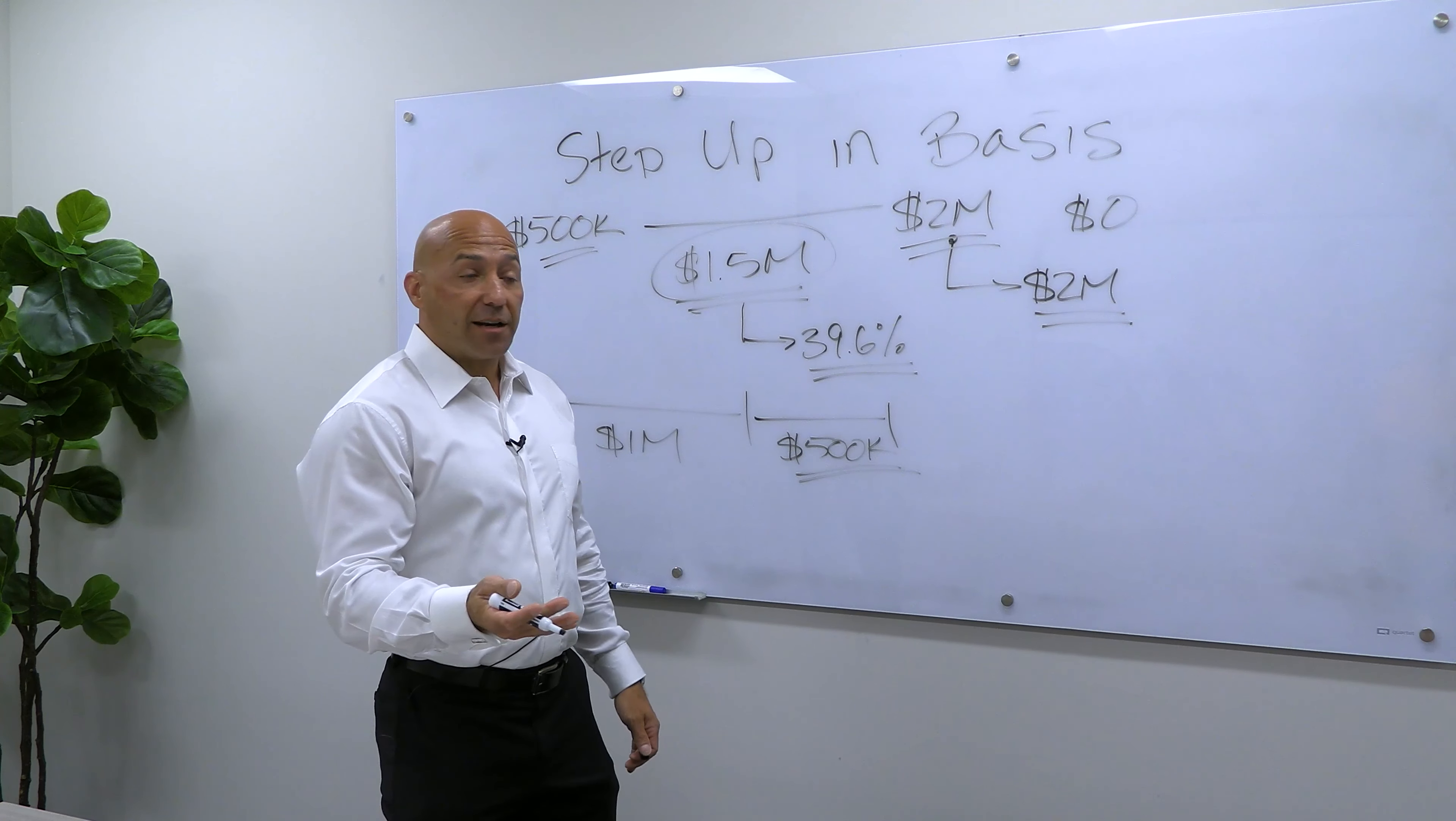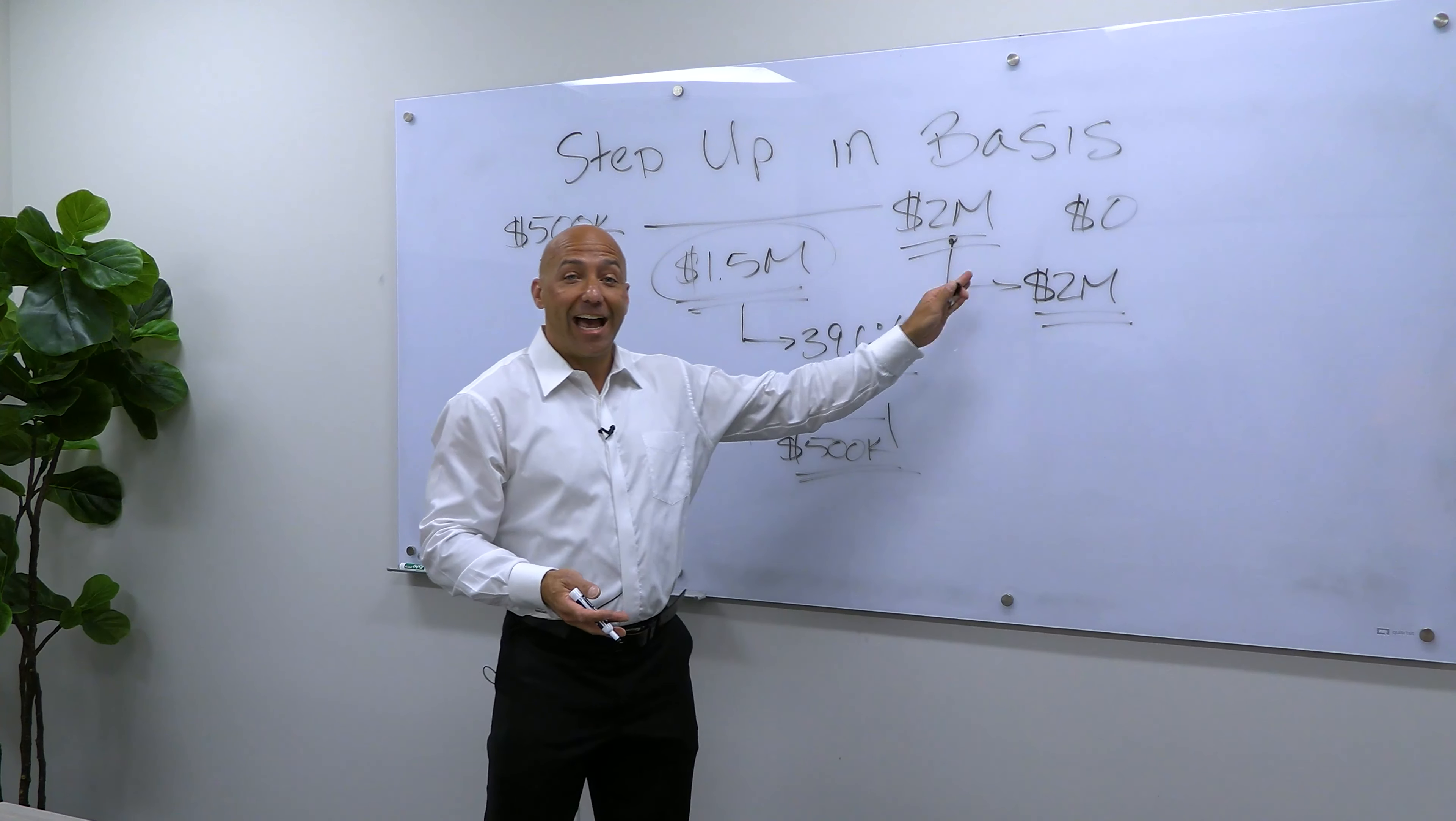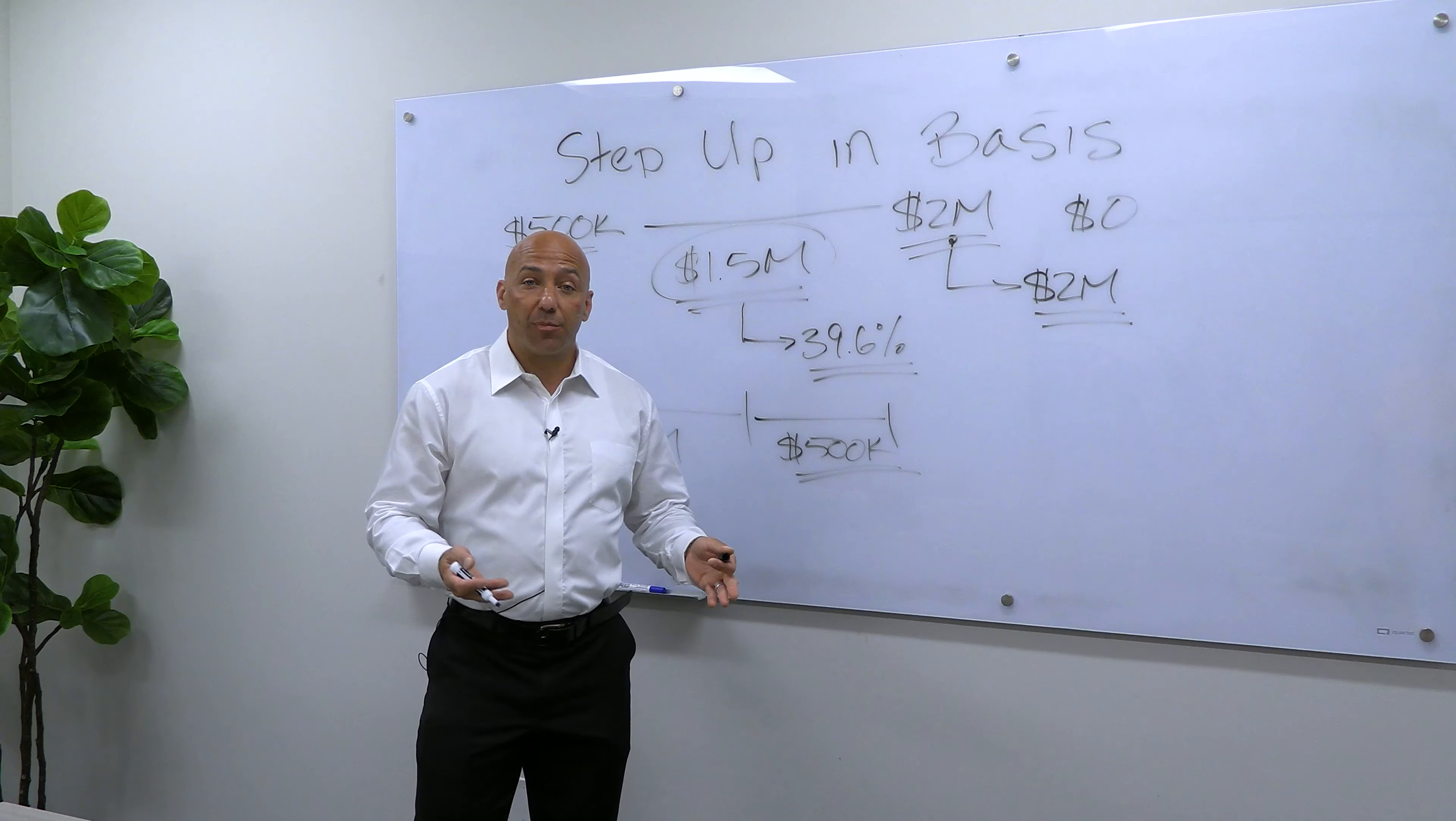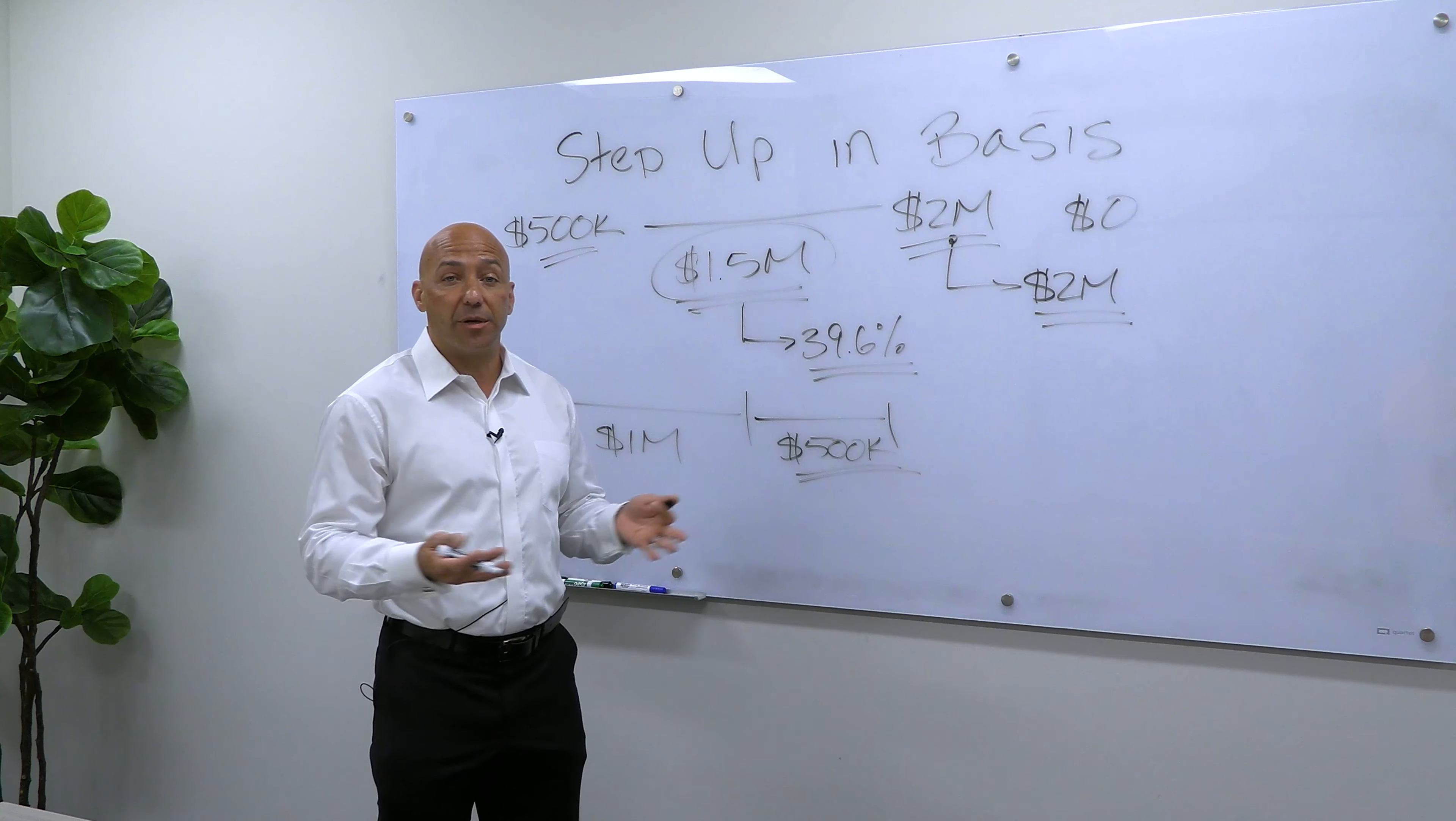So depending on the scenario, let's say he got this to push through. My kids would owe taxes on the $1.5 million of gain, even though they weren't planning on selling the property. So where that becomes a very, very big problem is let's assume that my kids don't have the cash to be able to pay the tax on the gain.